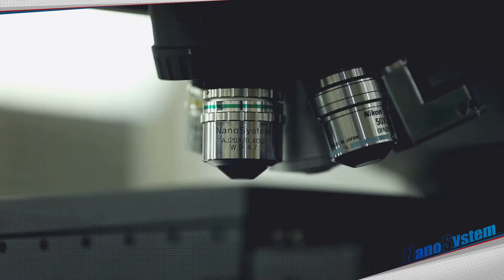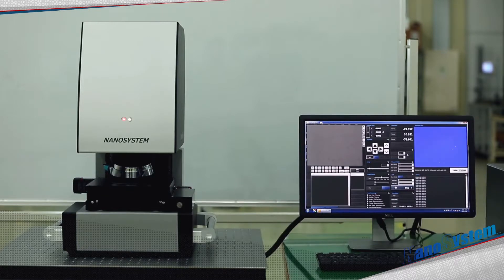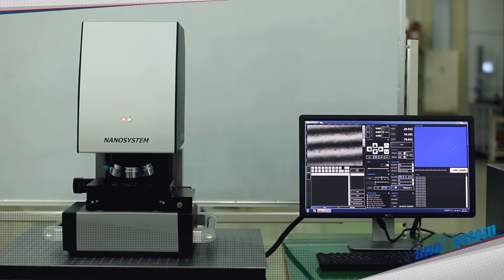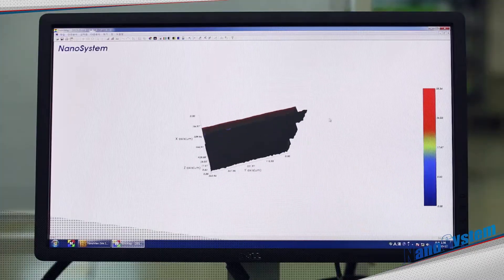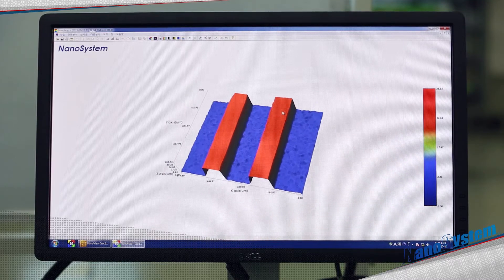Without any destruction, NanoSystem's WSI technology, White Light Scanning Interferometry, can measure samples in a few seconds from 0.1 nanometers up to 10,000 micrometers and provide real 3D shapes of samples.